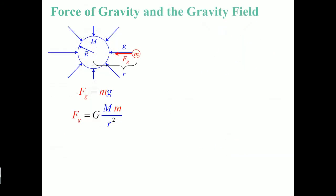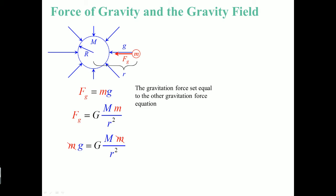We can see the interaction between the force of gravity and the gravitational field. FG equals mg is the force of gravity. FG equals GMm over R squared is the force of gravity as well. You can see the two expressions are equal — the two masses cancel here. Technically, these are different masses: one is your inertial mass and one is your gravitational mass. But for the sake of this explanation, those two can cancel out — they are experimentally the same.